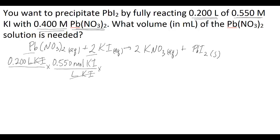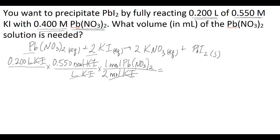You want to get to moles of lead nitrate because you ultimately want to determine what volume of lead nitrate is needed, and you do know its molarity. So you convert from moles of potassium iodide to moles of lead nitrate: there are two moles of potassium iodide for every one mole of lead nitrate. The moles of potassium iodide cancel, leaving you with 0.055 moles of lead nitrate.